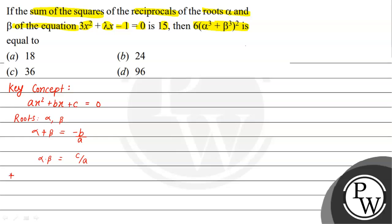The second key concept is the identity: α³ + β³ = (α + β) multiplied by [(α + β)² - 3αβ]. We will use both of these concepts to solve this question.